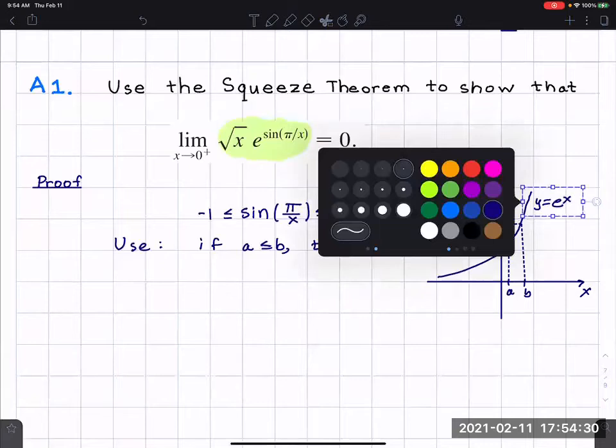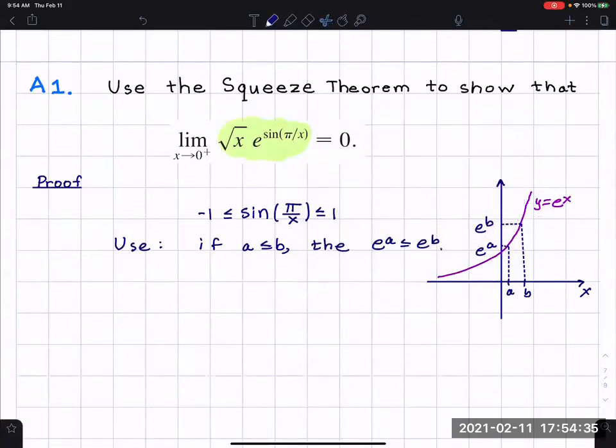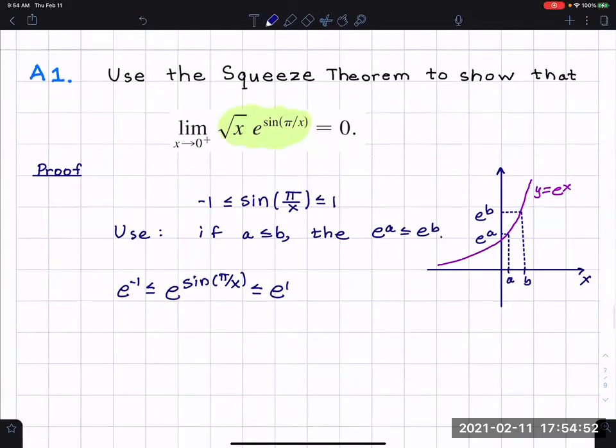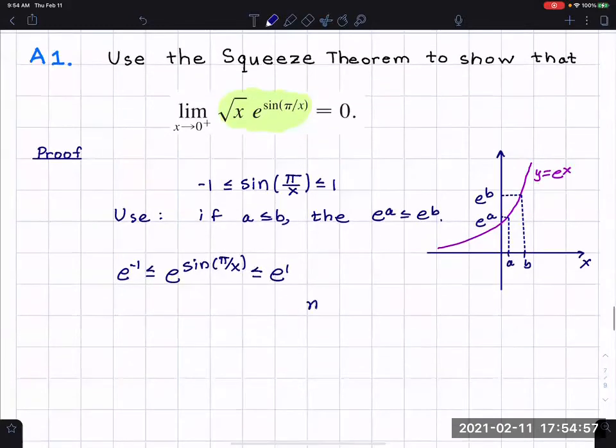This problem is a little bit more difficult than some other ones, but kind of have some fun. So therefore, e to the negative one is less than or equal to e to the sine pi over x is less than or equal to e to the one. Then I almost have that inside function that I've highlighted in green. I'm just going to next multiply by radical x.